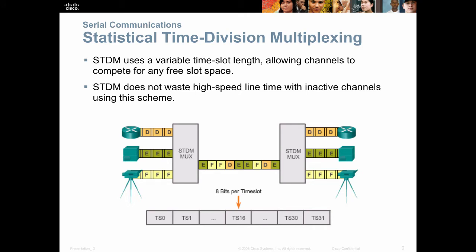Statistical time division multiplexing is a method by which we can use unused time slots. Say I had given a video application 50% of the bandwidth and voice calls 10% — but voice could use more. STDM allows me to go over my 10% as long as there are unused time slices available. Without STDM, everybody would get only their allocated time slices, and if someone else wasn't using all theirs, they would just travel empty. STDM is a variable time slot technology allowing channels to compete for free slot space.